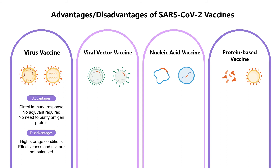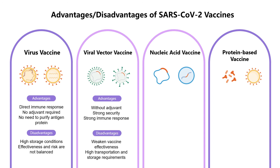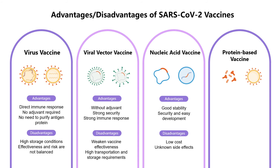Viral vector vaccines without adjuvants are safe and can cause a strong immune response. However, the existing immunity to the vector may weaken the effectiveness of the vaccine, and there are certain requirements for transportation and storage. Nucleic acid vaccines are of excellent stability, safety, and ease of development with affordable production costs. However, the side effects are still unknown.